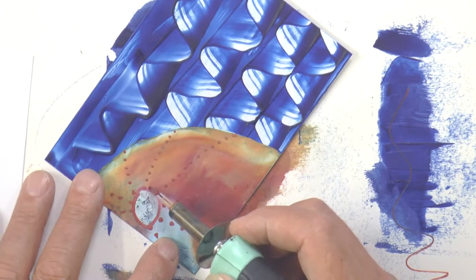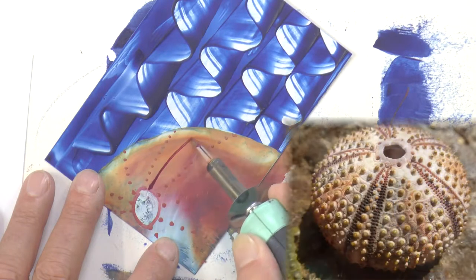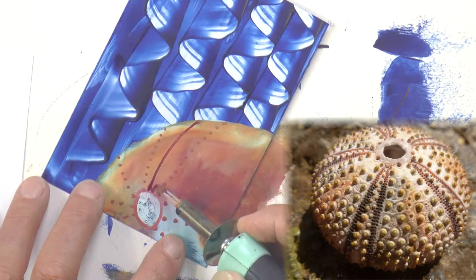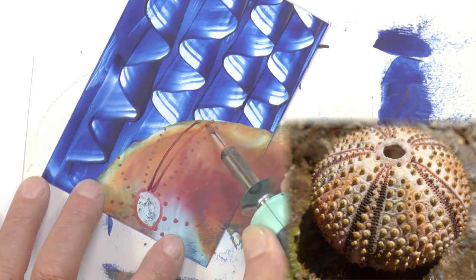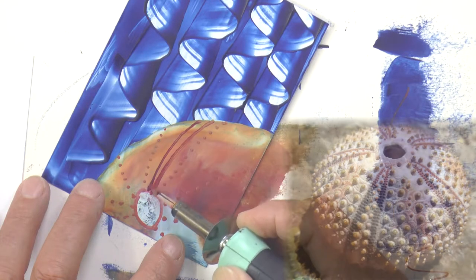So let's do a couple of lines just arcing down there. Another one. I think I'll darken this line at the top. I did.